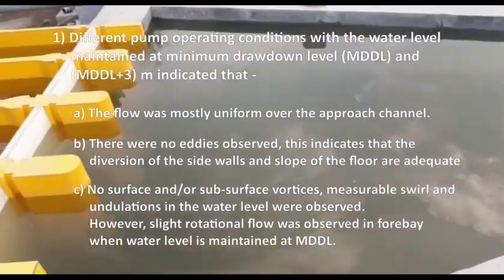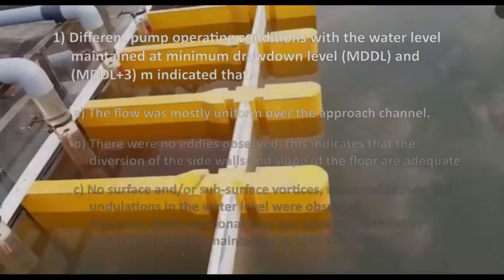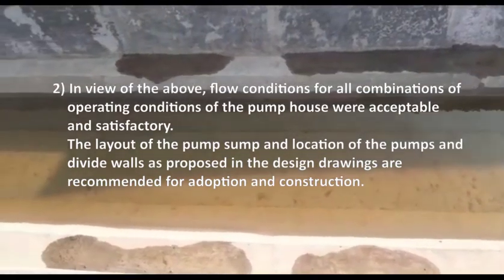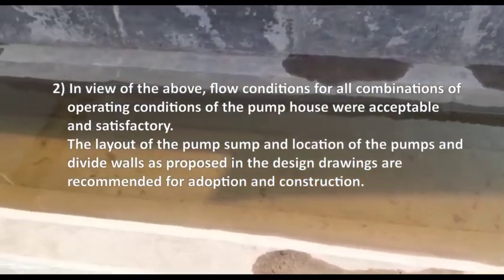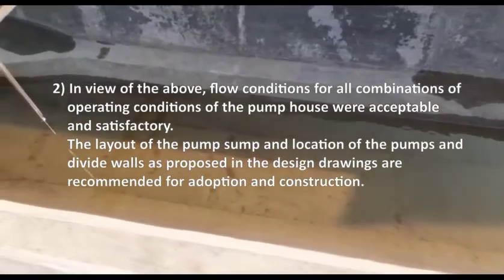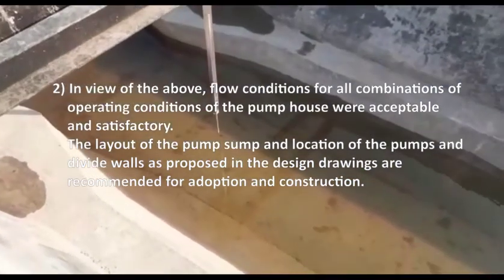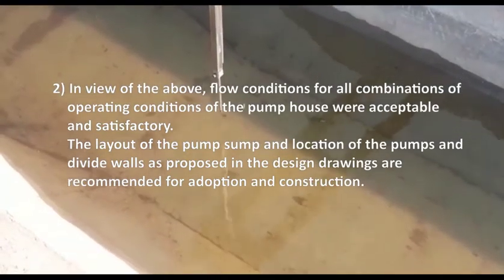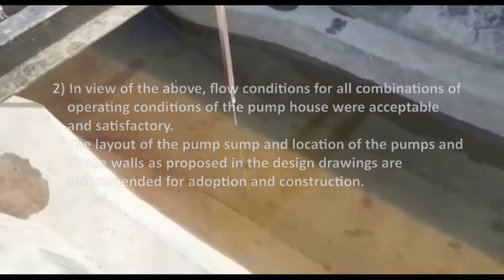However, slight rotational flow was observed in the forebay when the water level is maintained at MDDL. In view of the above, flow conditions for all combinations of operating conditions of the pump house were acceptable and satisfactory. The layout of the pump sump, and location of the pumps and divide walls as proposed in the design drawings are recommended for adoption and construction.